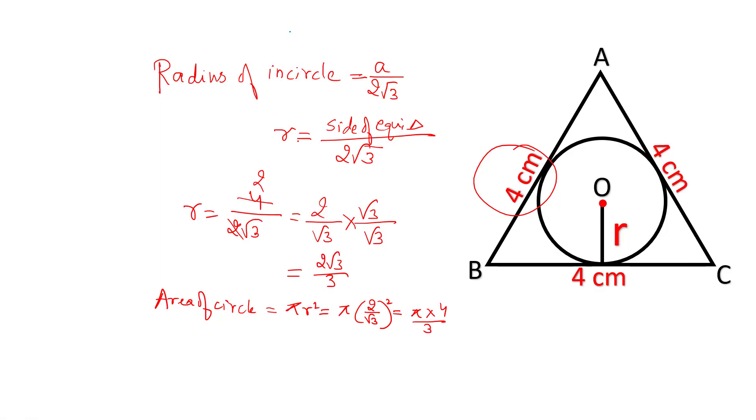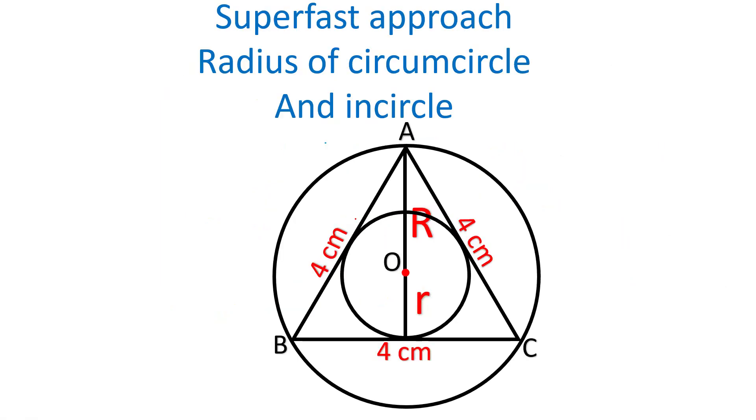Now, together if we want to calculate both incircle as well as circumcircle, the radius of circumcircle will be given by a upon under root 3, and the radius of incircle is given by a upon 2 under root 3. Direct formula.